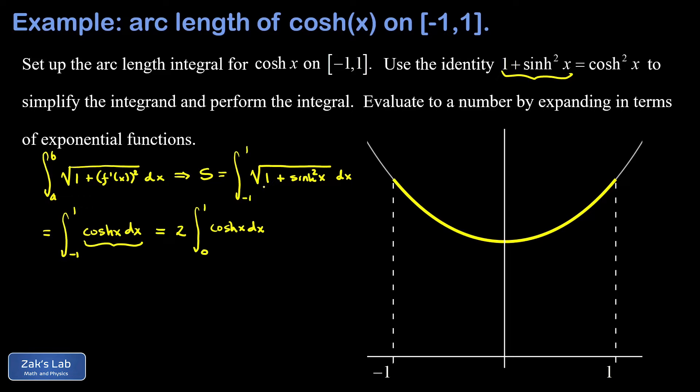Next we just find the anti-derivative of the cosh function, which is the sinh function itself, and we're going to evaluate this from zero to one. So our arc length turns out to be two sinh of one minus two sinh of zero.